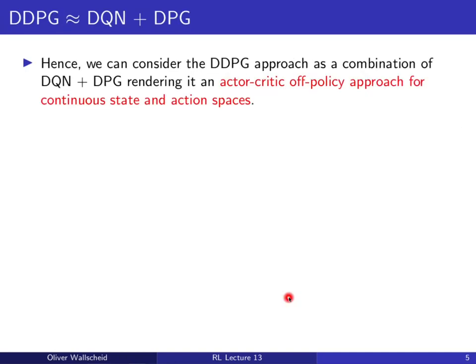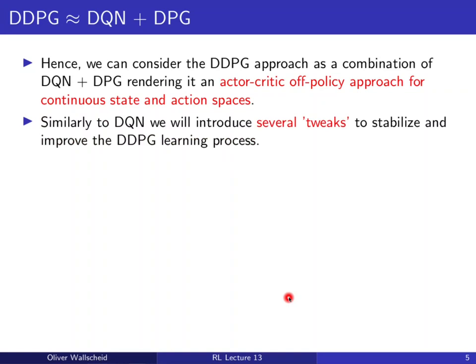In summary, DDPG is a combination of DQN (from lecture 10) and deterministic policy gradients (from lecture 12). It is an actor-critic approach — the actor is the policy and the critic is the Q-learning part — and it is an off-policy approach applicable to continuous state and action spaces. However, applying this combination naively results in an unstable learning process, so several tweaks are introduced, many already known from DQN.